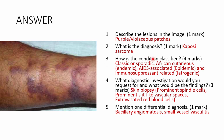Kaposi's sarcoma is classified into four types: classical/sporadic (also called European type), African cutaneous (endemic type), AIDS-associated (epidemic type), and immunosuppressant-related (iatrogenic type). For investigations, you'd do a skin biopsy, which shows three important findings: spindle cells, prominent slit-like vascular spaces, and extravasated red blood cells. Differentials include bacillary angiomatosis and small vessel vasculitis.